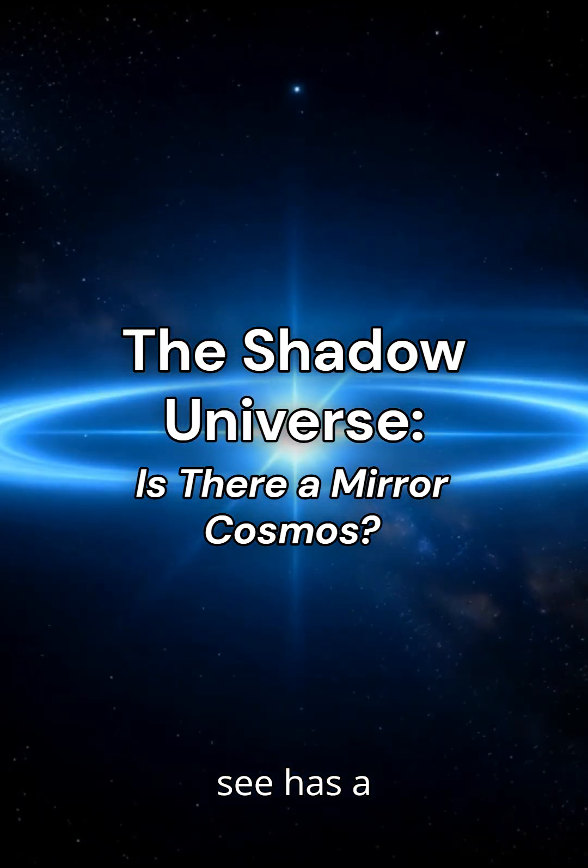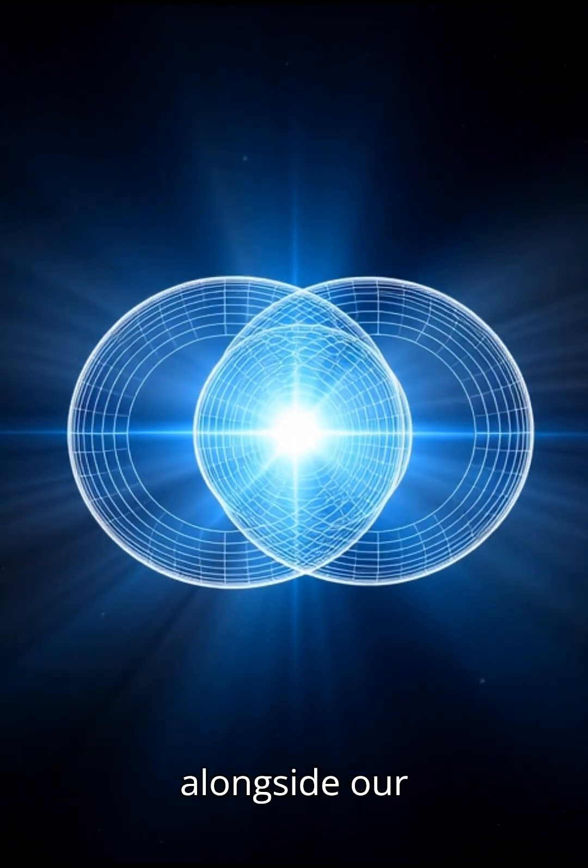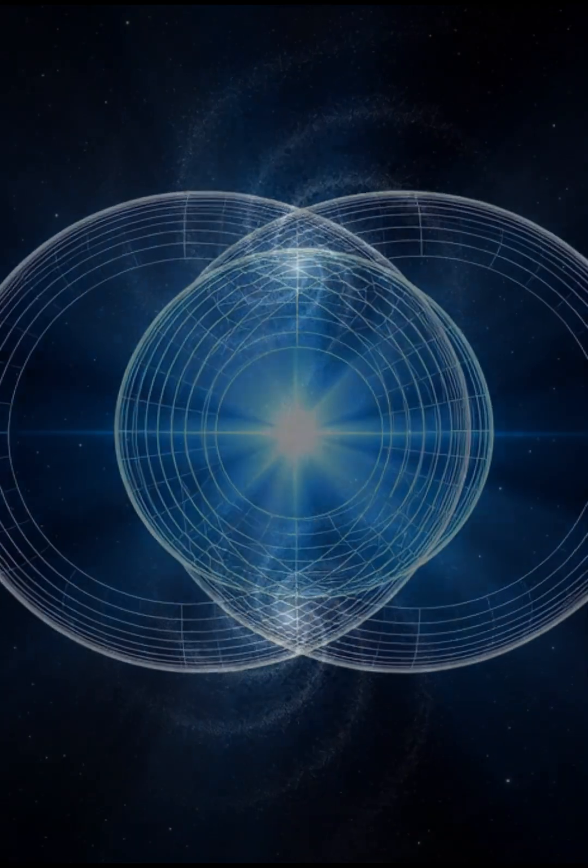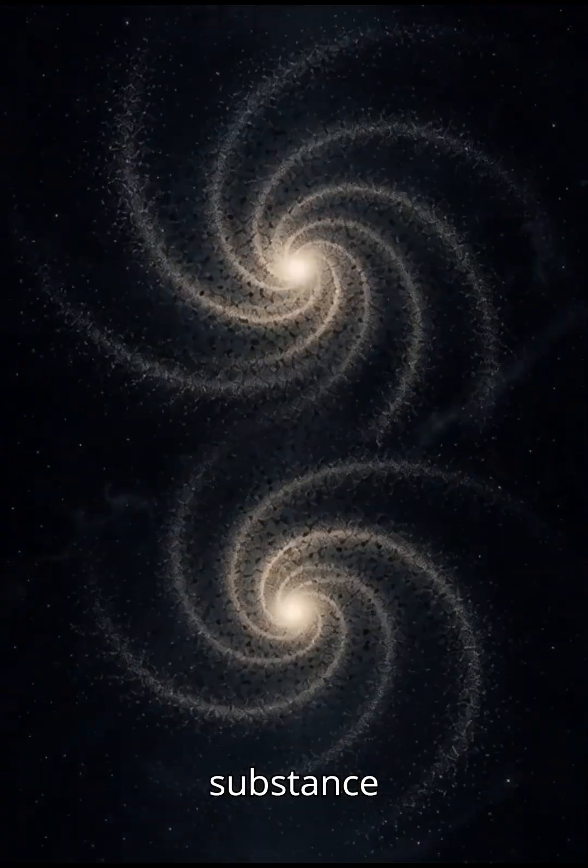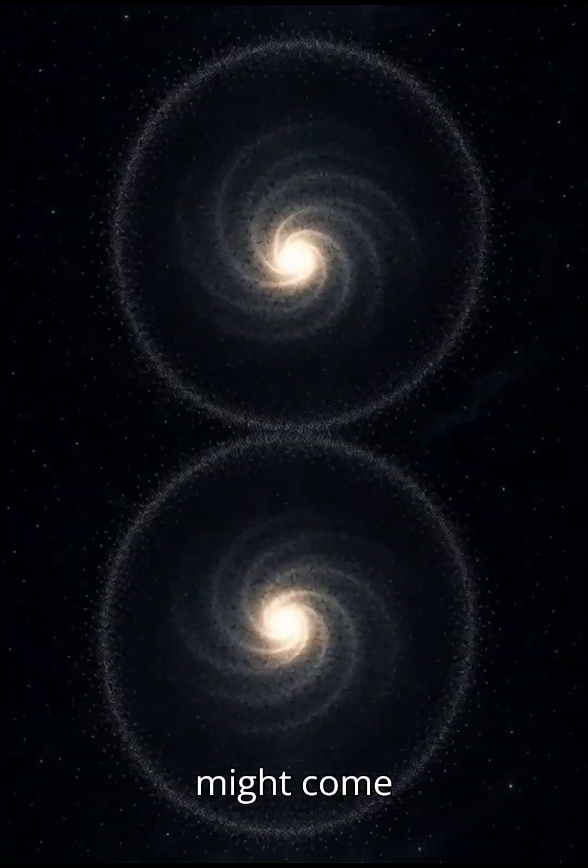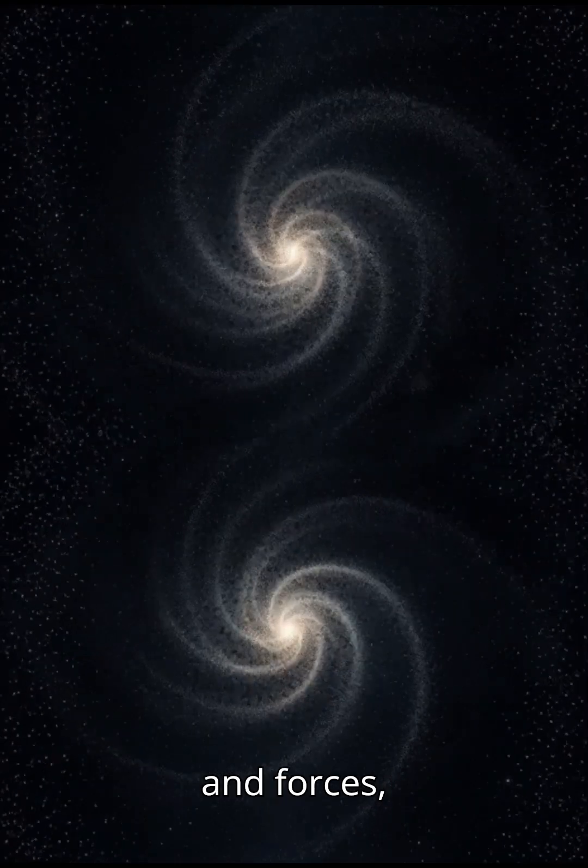What if everything we see has a hidden twin, a shadow universe woven alongside our own? Some physicists believe dark matter, the invisible substance shaping galaxies, might come from a mirror cosmos, a realm with its own particles and forces.